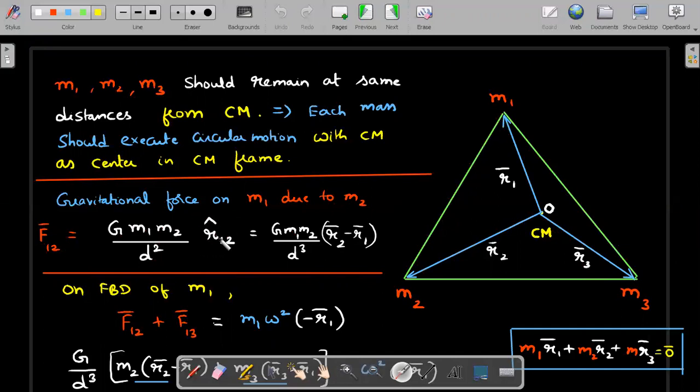In order to convert this unit vector into a normal vector, I multiply and divide by D. D is the length of that vector. So then this becomes a D cube. And then I can write this vector joining from one to two as R2 bar minus R1 bar.